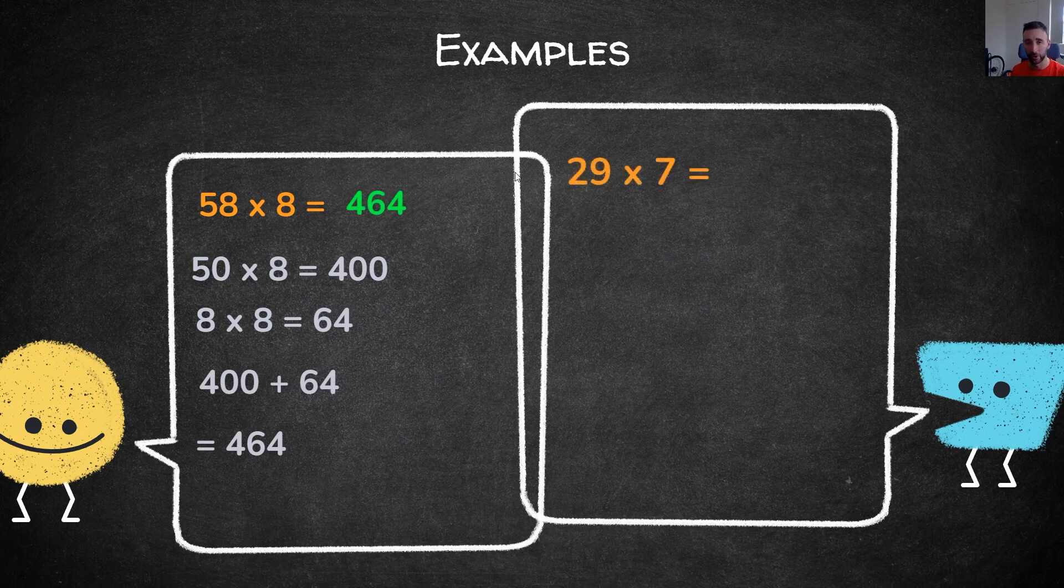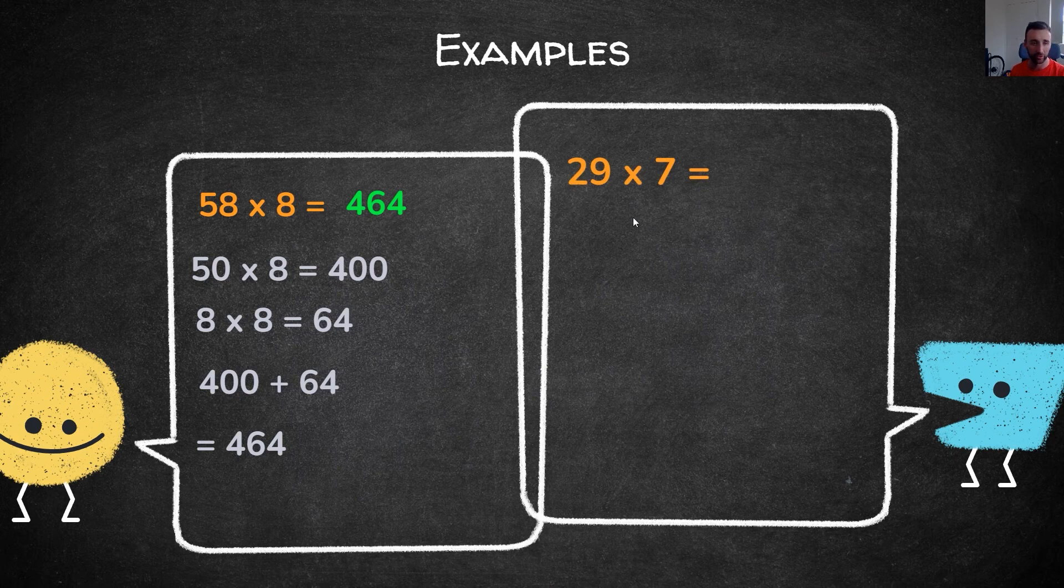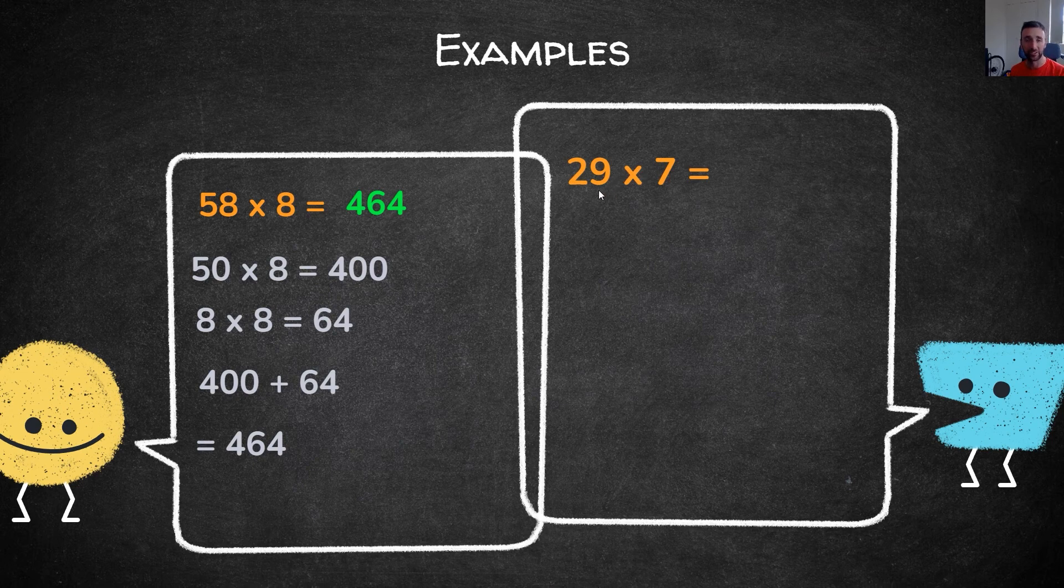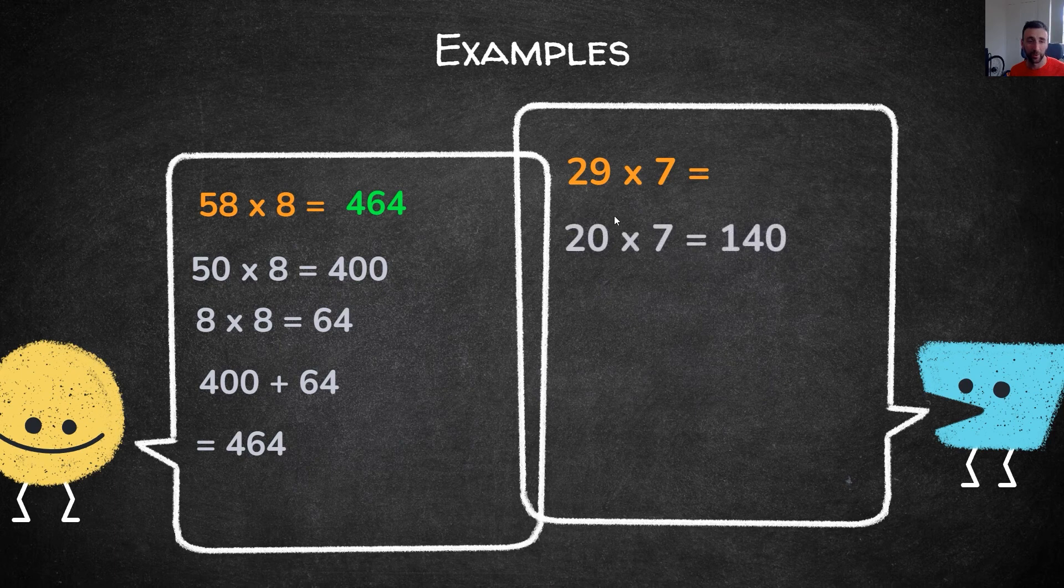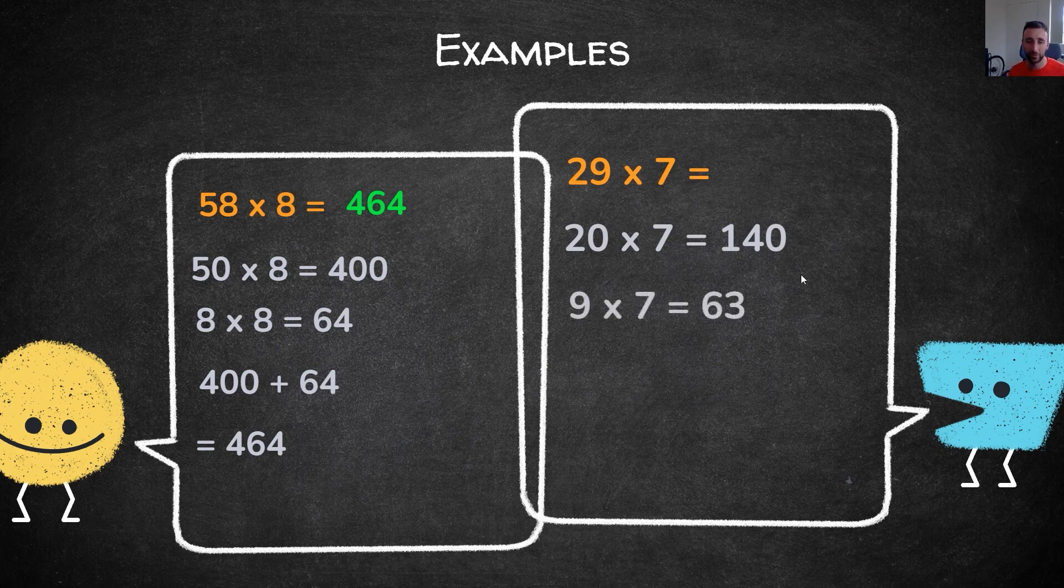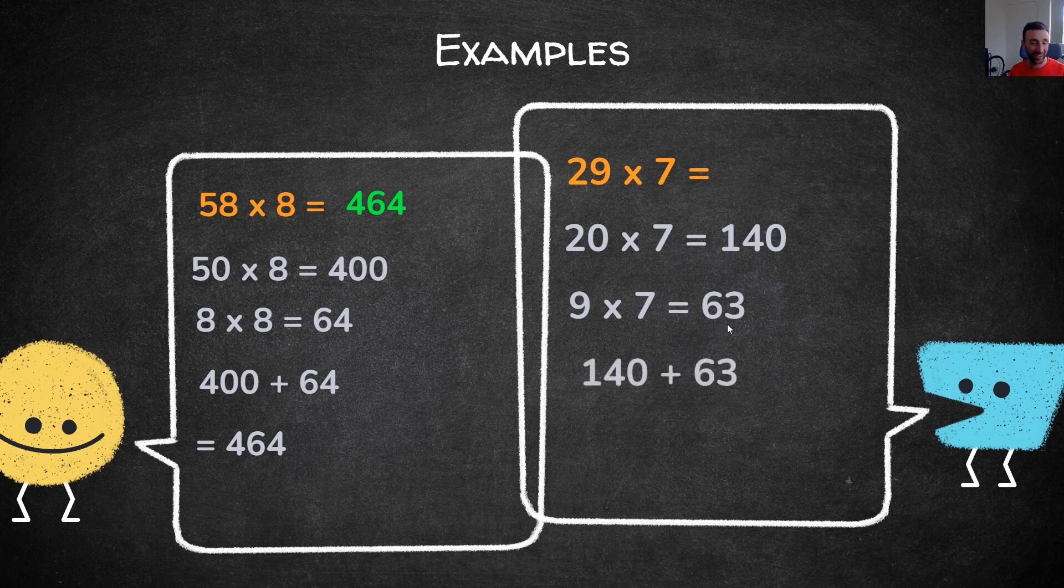Second example, 29 multiplied by 7. We're going to partition 29 because it's the bigger number and keep 7 the same. So 29 partitioned into tens and ones: 20 by 7 is 140, using 2 times 7 is 14 then add the 0, and 9 times 7 is 63. Add the two numbers together which gives us 203 as your final answer using partitioning.